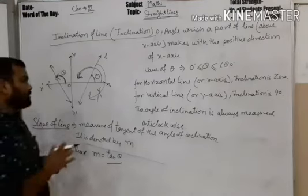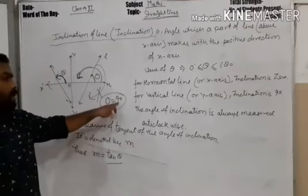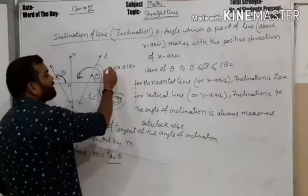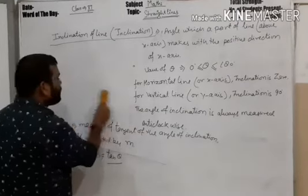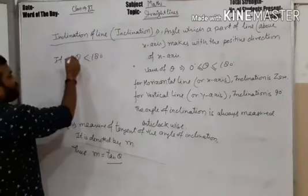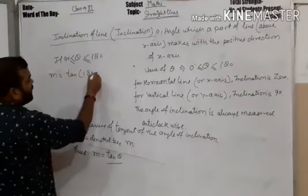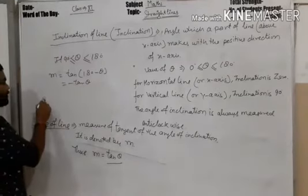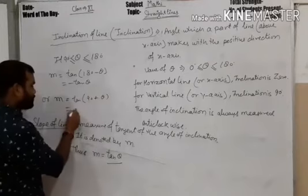Now, we have learned about angles between 0 and 90. What about the angle which is more than 90 but less than 180? For this, if your angle theta is greater than 90 but less than 180, then the slope M can be taken as tan(180 minus theta), that is minus tan(theta), or we can use tan(90 plus theta), which equals minus cot(theta).